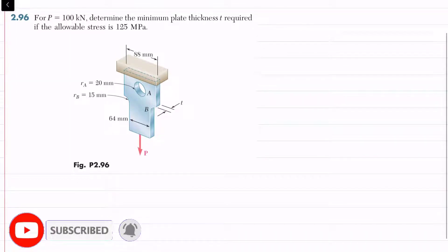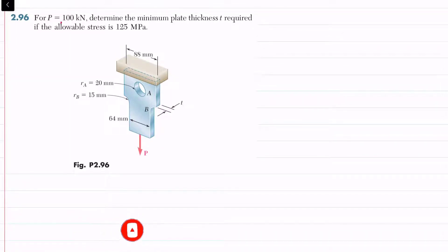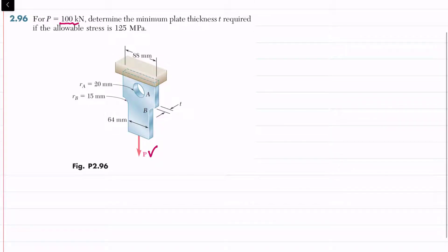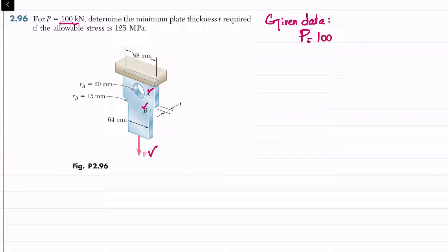Welcome back. Problem 2.96: for P equal to 100 kilonewton, determine the minimum plate thickness t required if the allowable stress is 125 megapascal. You can see this is the plate where the P load is applied. P is 100 kilonewton, all the dimensions are given, there is a hole A and a fillet B. Given data: load P = 100 kN, allowable stress = 125 MPa.